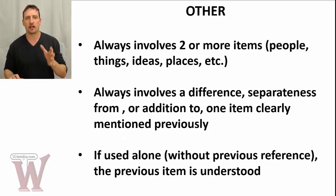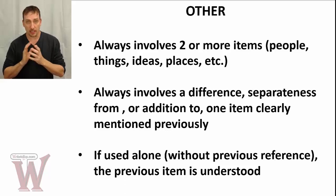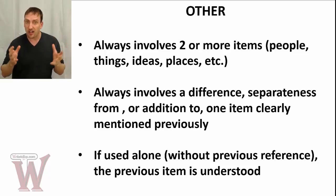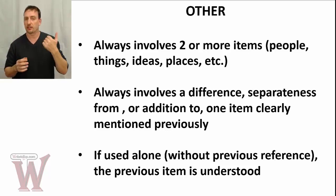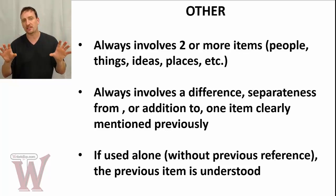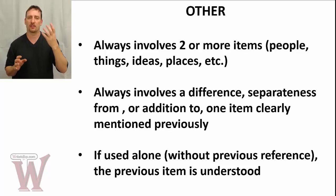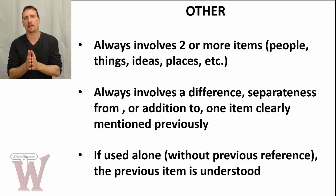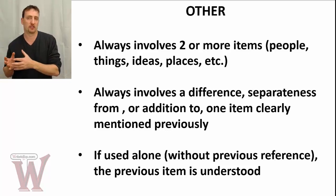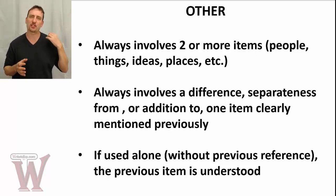Let's get started with "other" as a general meaning. The first thing you have to remember: there are always two or more items involved — in the context, in the sentence, in the paragraph. It could be people, things, ideas, places — any noun — that you're talking about two separate ones or more than two. Point two: it always involves a difference, a separateness from, a distinction from, or an addition to something that was clearly mentioned before.